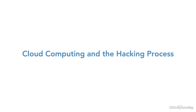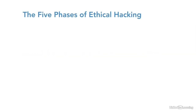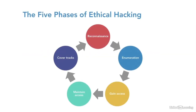Thinking like a malicious user can help IT technicians prevent security breaches against cloud computing. This video focuses on cloud computing and its relationship to the five phases of ethical hacking: reconnaissance, enumeration, gaining access, maintaining access, and the covering of tracks. Let's apply each of these five phases to cloud computing.